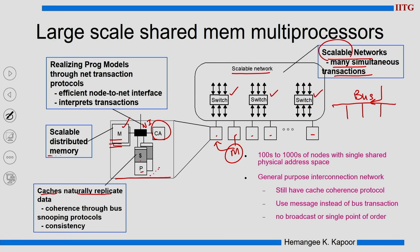We have scalable distributed memory — scalable because as I add nodes, we can continue to add memory modules and increase the capacity available to the complete system. Then we have the communication assist and the network interface, which together help execute all the network transactions and are in fact the foundation for executing a scalable coherence protocol.